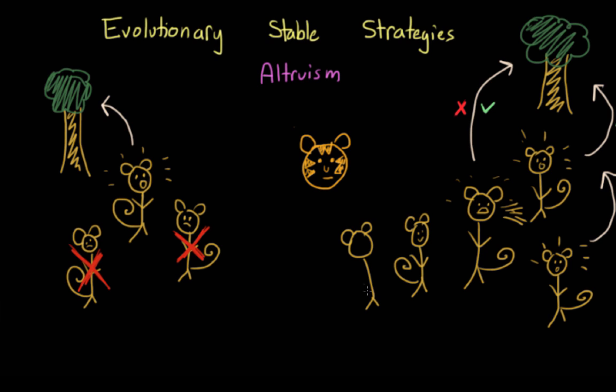Making our monkey, or maybe the kin of our original monkey, more likely to survive and reproduce. And that's why evolutionary game theory would predict the appearance of altruism within a group.